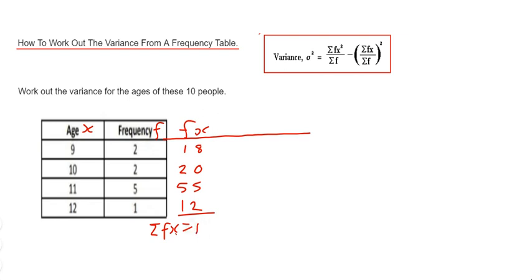Okay, so we're now going to add another column on and we're going to work out fx squared. So we're going to square the ages and then times it by the frequency.